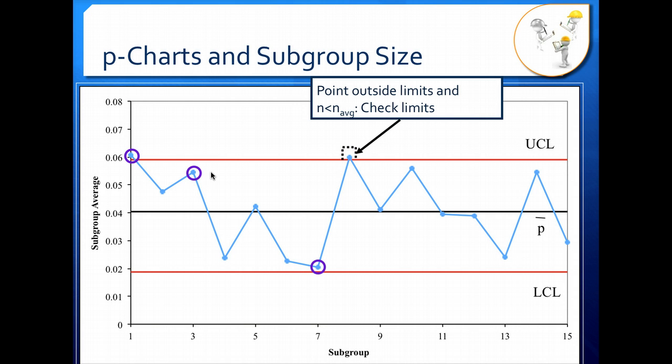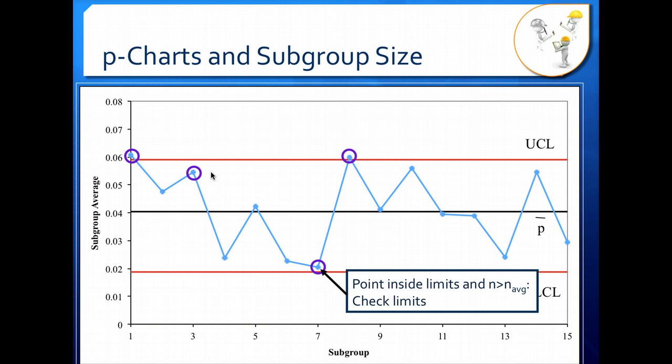So here we want to check our limit and say where is our point in regards to our real limit. We want to do the same thing if we have a point inside the limits and our n is larger than our average n.